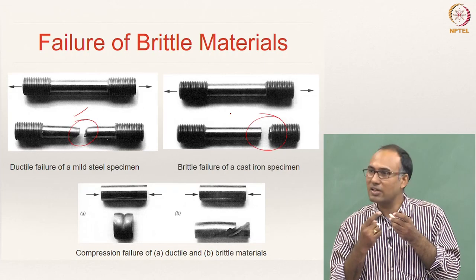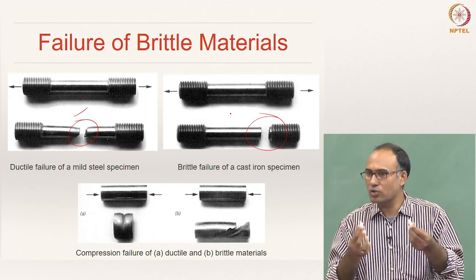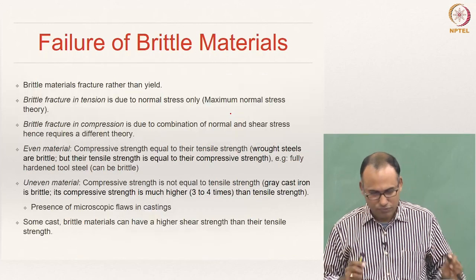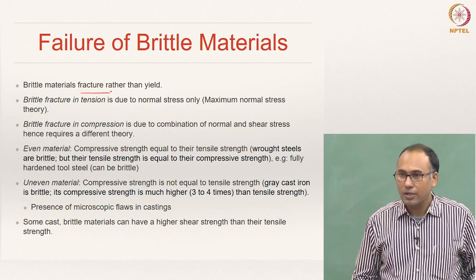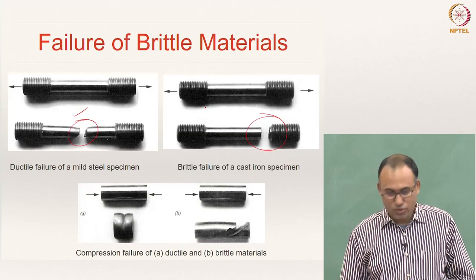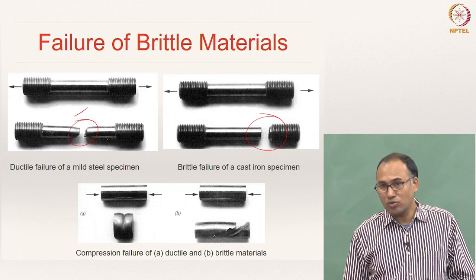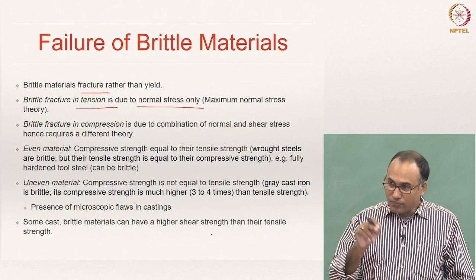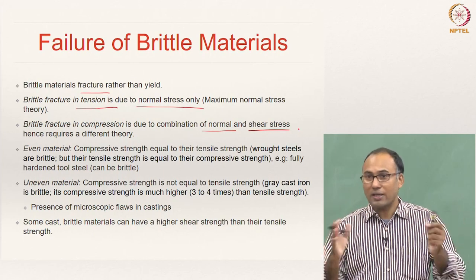By looking at the failure surface we can say whether it is a ductile failure or brittle failure, but if they do not look at the failure surface and you show them from a distance, it is difficult to identify. Brittle materials fracture rather than yielding — they do not yield, they fracture. Brittle fracture in tension is due to only normal stresses. When you apply compression to a brittle material, it also fails not in the normal plane but at a certain angle.